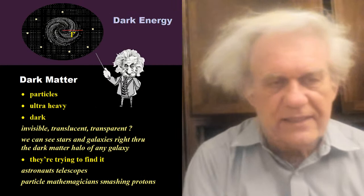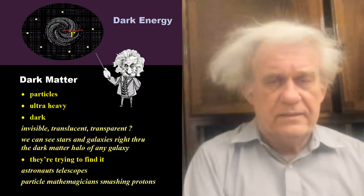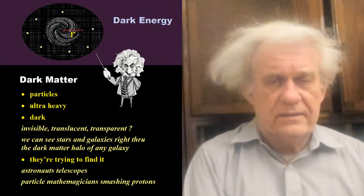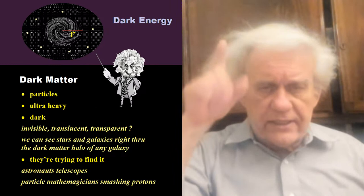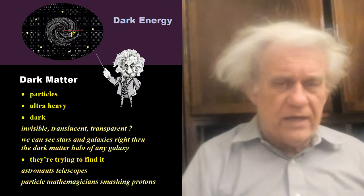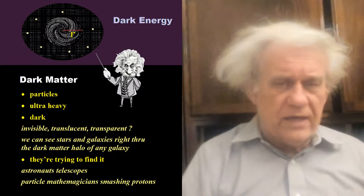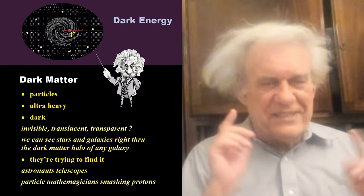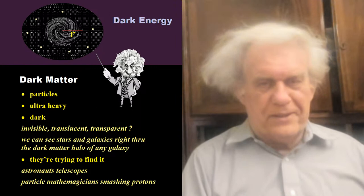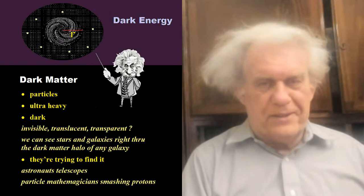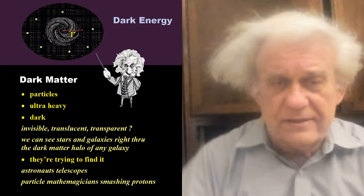They call them dark matter — why do they call it dark matter if they're invisible, translucent, transparent? You see a galaxy there and they say dark matter is that halo you see around the galaxy. When astronomers look at these galaxies, they see the stars right through the so-called dark matter, like it wasn't there. So if you can see right through it, we're not talking about dark — we're talking about translucent, invisible, transparent. You can see right through the dark matter as if it weren't there at all.